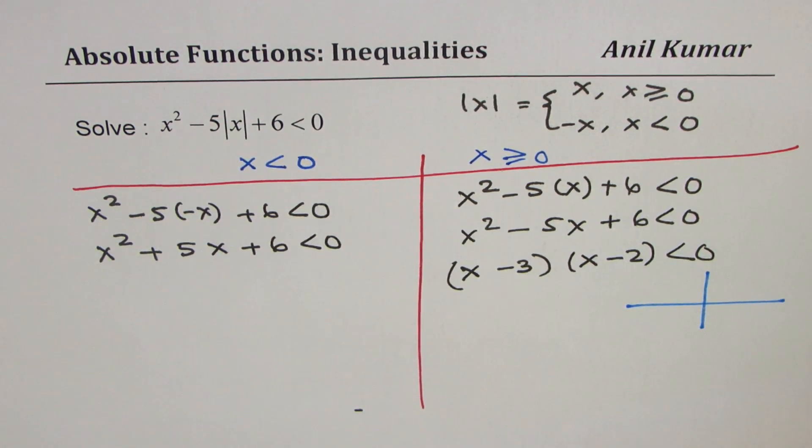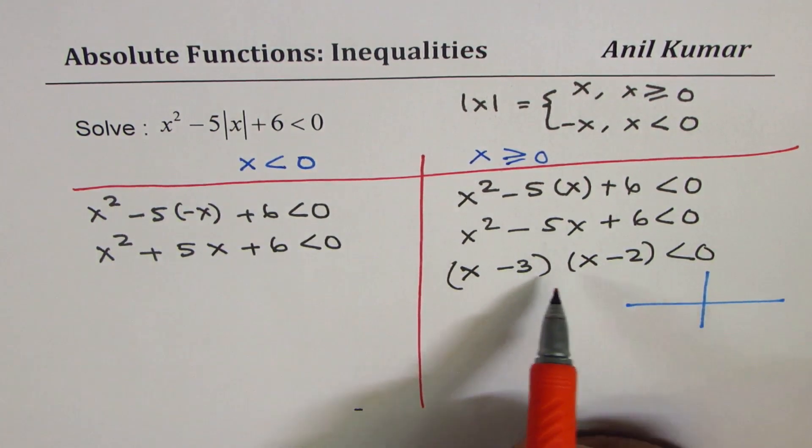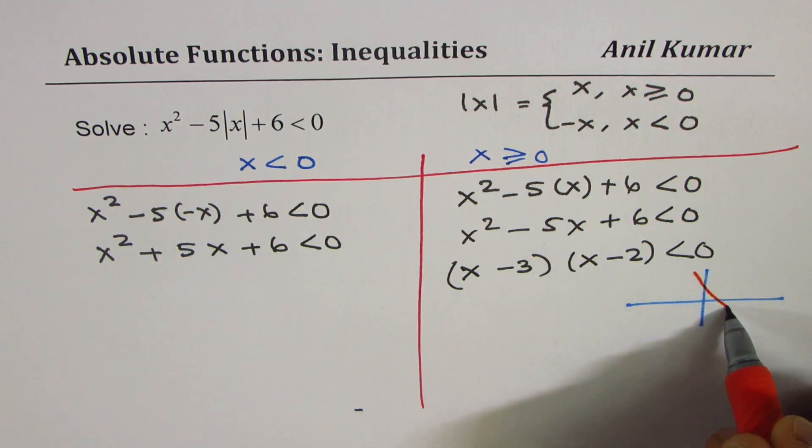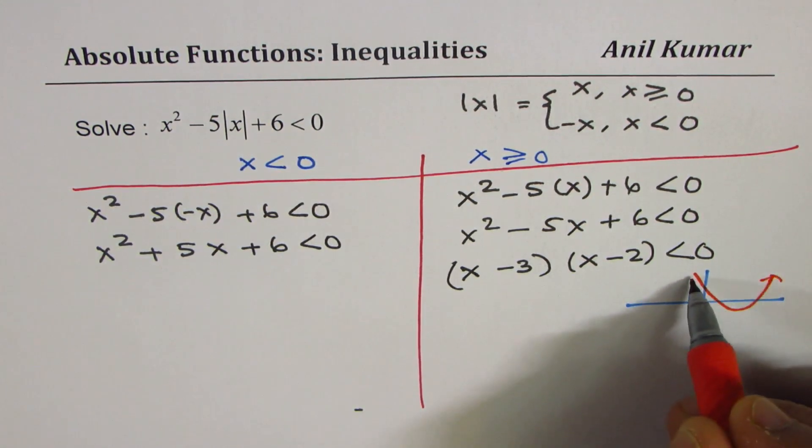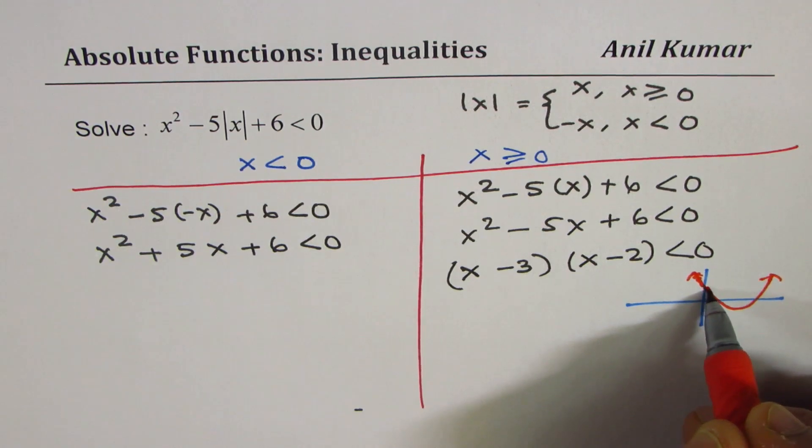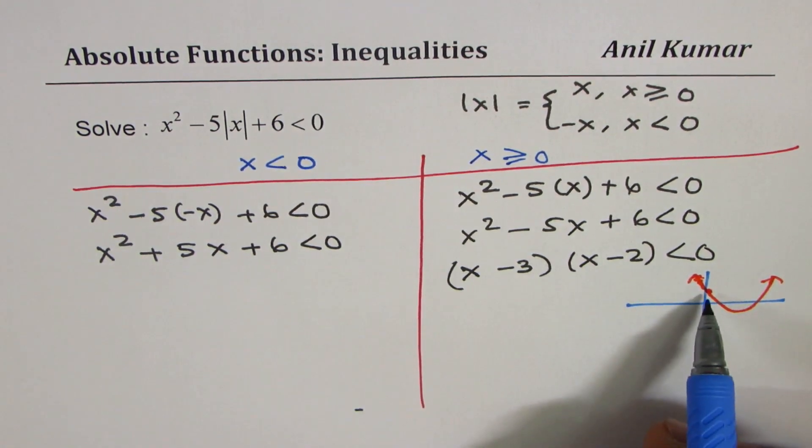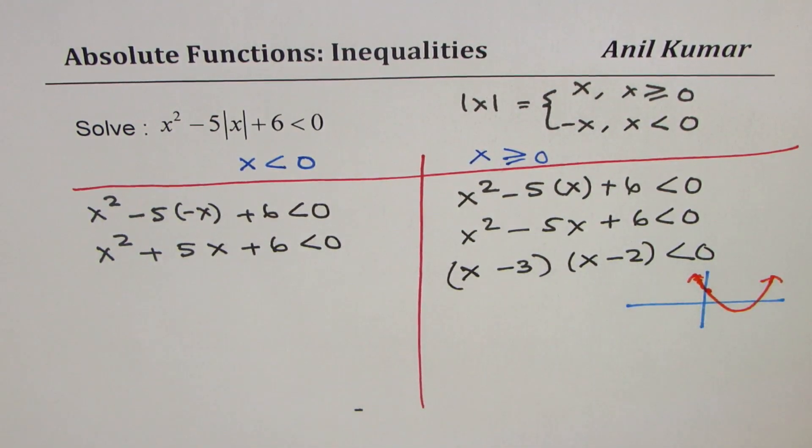When we say x has zeros at 3 and 2, that means something like this, a parabola opening upwards. We are only interested from here onwards. This part will be 6 when x is 0.